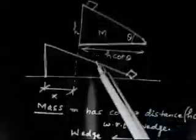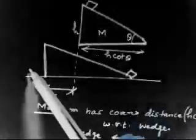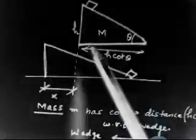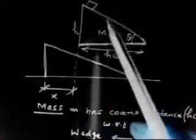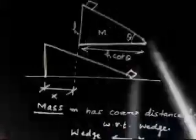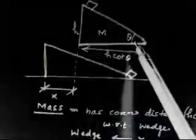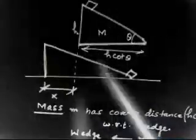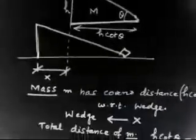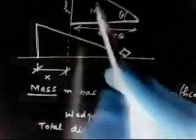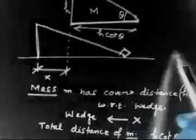The base itself has moved a distance X in this direction. So the total distance covered by the small mass in this direction is H·cot(theta) minus X, because I have to add the distance covered by the base itself.